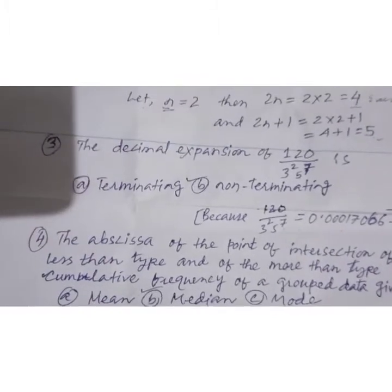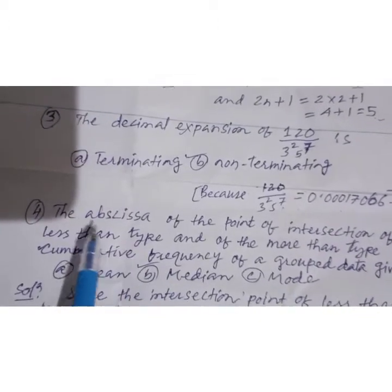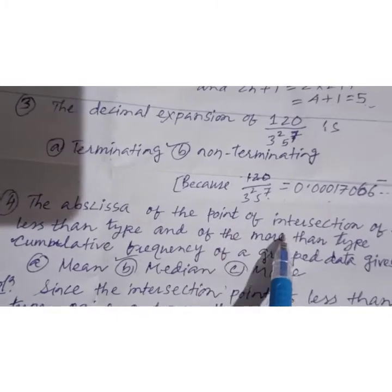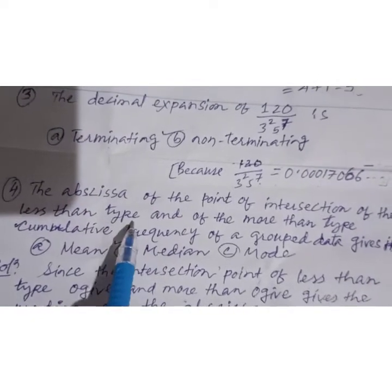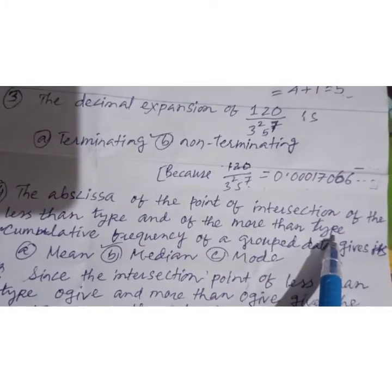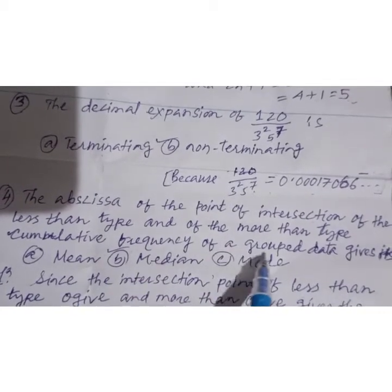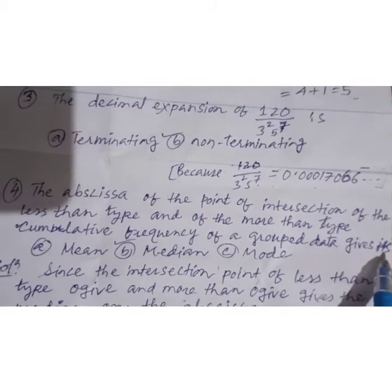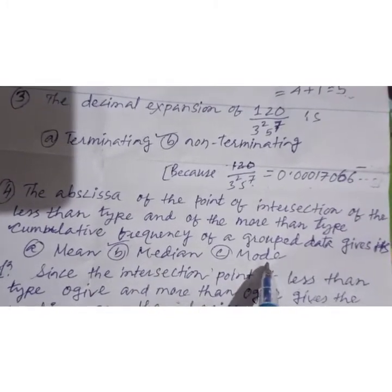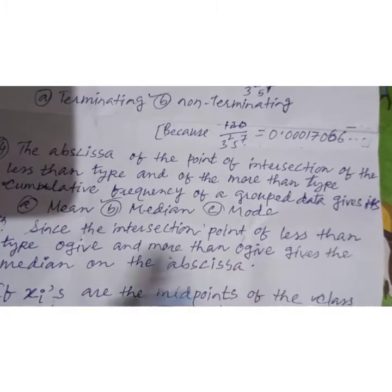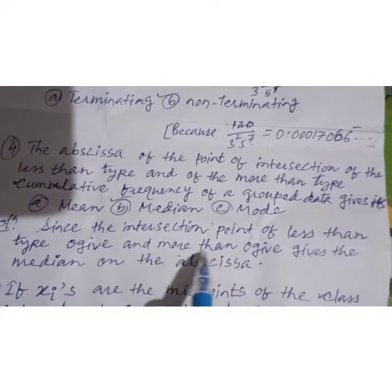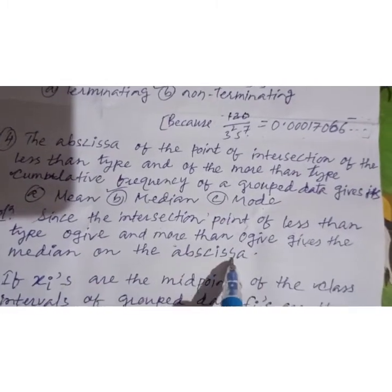From the statistics part: the abscissa of the point of intersection of the less-than type and the more-than type cumulative frequency curves of grouped data gives the median — not the mean or mode. The reason is that the intersection point of the less-than ogive and more-than ogive gives the median on the abscissa.